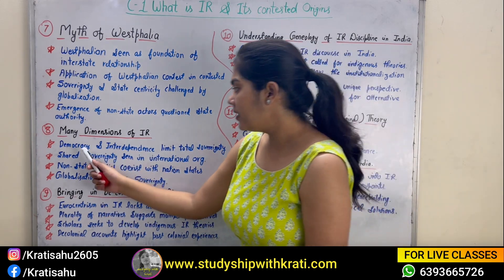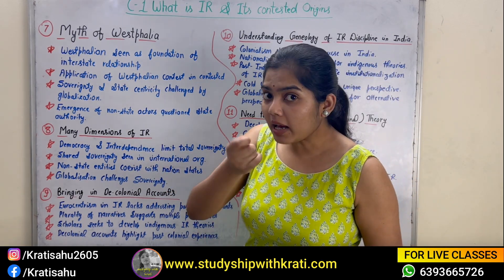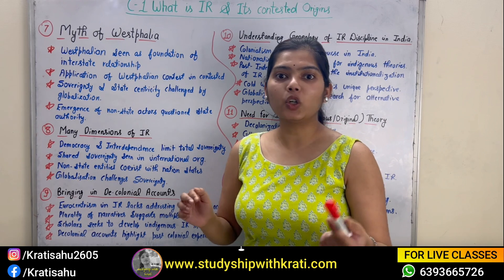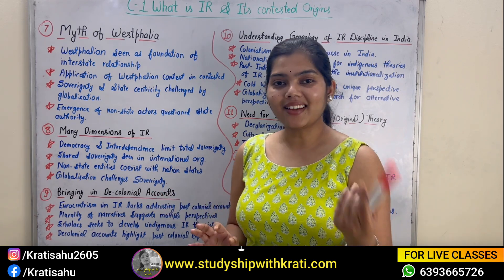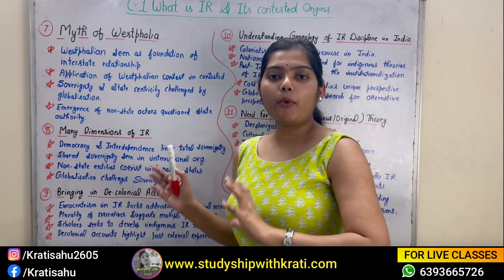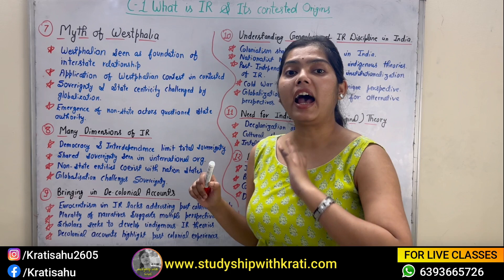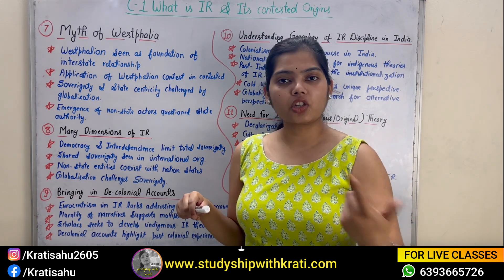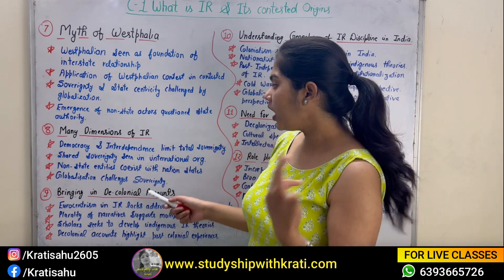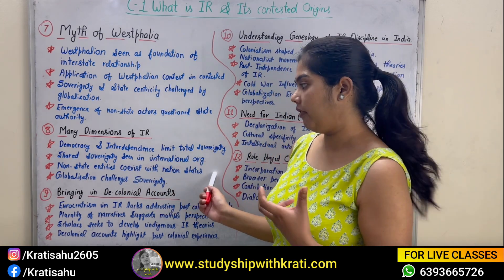There are many dimensions of IR - we cannot just depend upon the Westphalian concept, we need to go for other dimensions as well. For instance, democracy and interdependence limit total sovereignty. Sometimes we require other countries' interaction. We are exchanging with and dependent on other countries, and other countries are dependent on us.